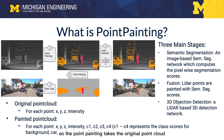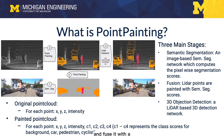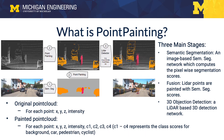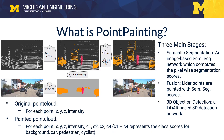Point Painting takes the original point cloud (X, Y, Z, intensity) and fuses it with RGB image semantic information to produce a painted point cloud with additional feature channels C1, C2, C3, C4, each standing for background, car, pedestrian, and cyclist respectively.